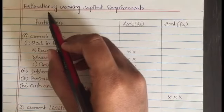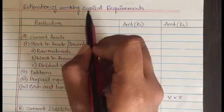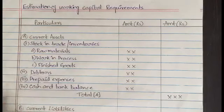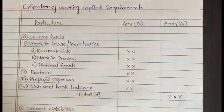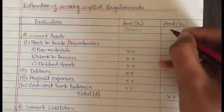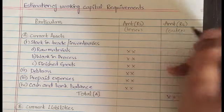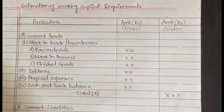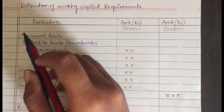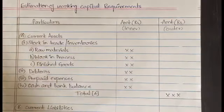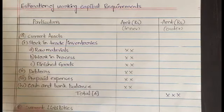Here we have the estimation of working capital requirements. We are going to estimate the working capital requirements, and we are dividing it into three columns: particulars, amount (inner), and amount (outer). In the particulars column we have some requirements and all the calculations we will be seeing now. We have a total of five parts, in which two parts are very important to be discussed, and the remaining three parts we can get from these two parts.